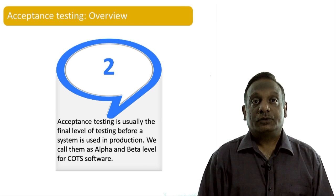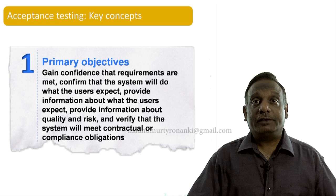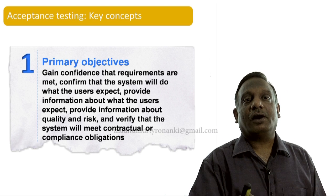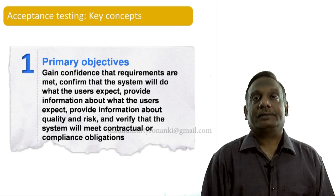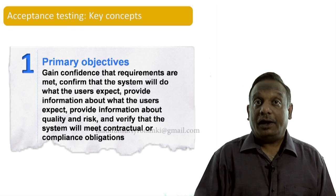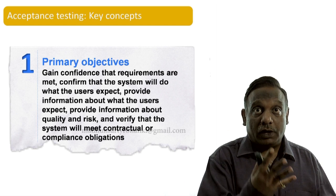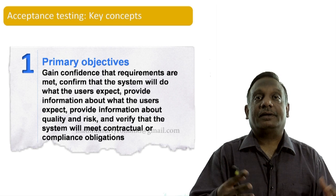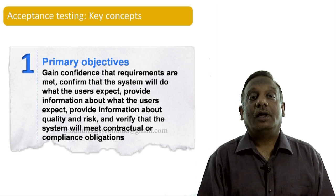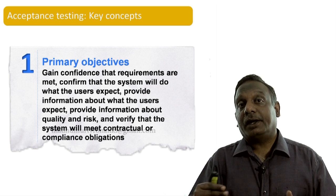Now let us learn about the key concepts involved with acceptance level testing. The primary objective is to gain confidence that requirements are met, confirm that the system will do what the users are expecting, provide information about the overall quality of the system and the risk involved, and verify that the system will meet its contractual or compliance obligations.